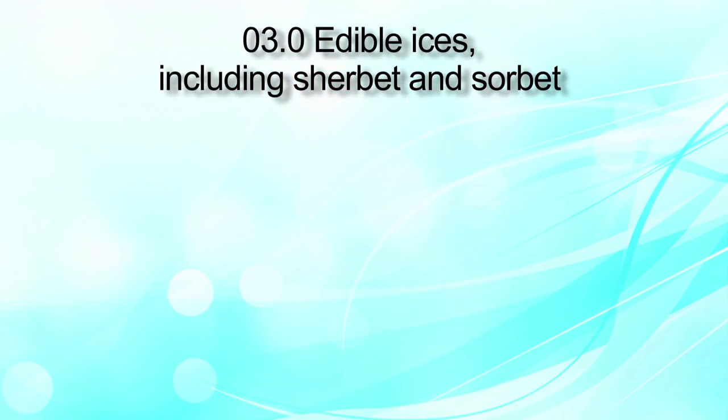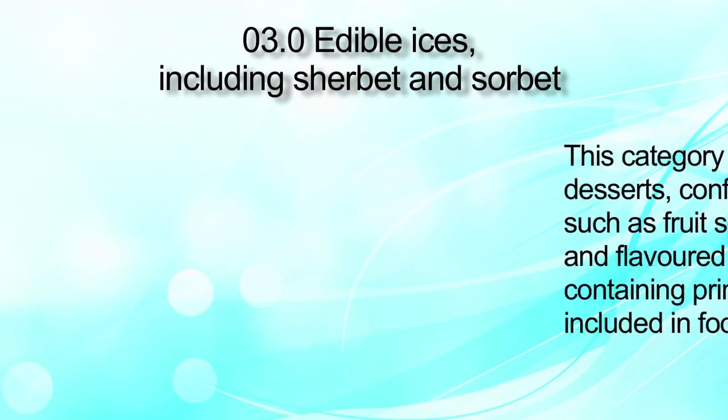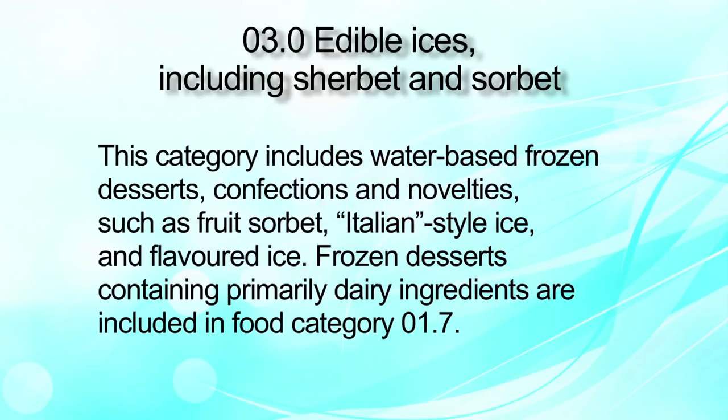Category number 3 is edible ices including sherbet and sorbet. This category includes water-based frozen desserts, confections and novelties such as fruit sorbet, Italian-style ice, flavored ice, and frozen desserts containing primary dairy ingredients which are included in food category 1.7.